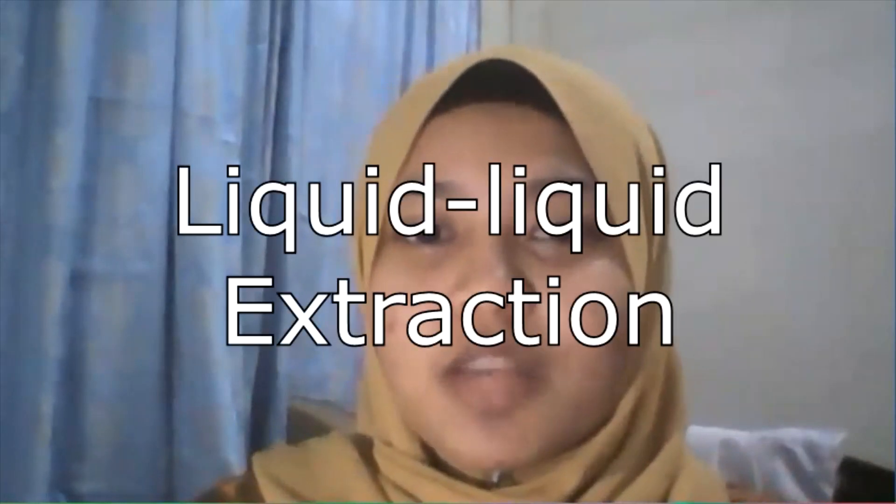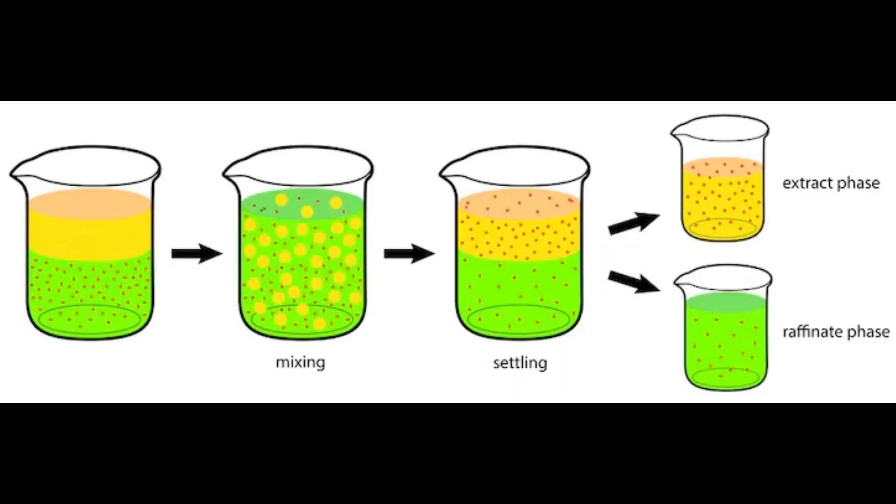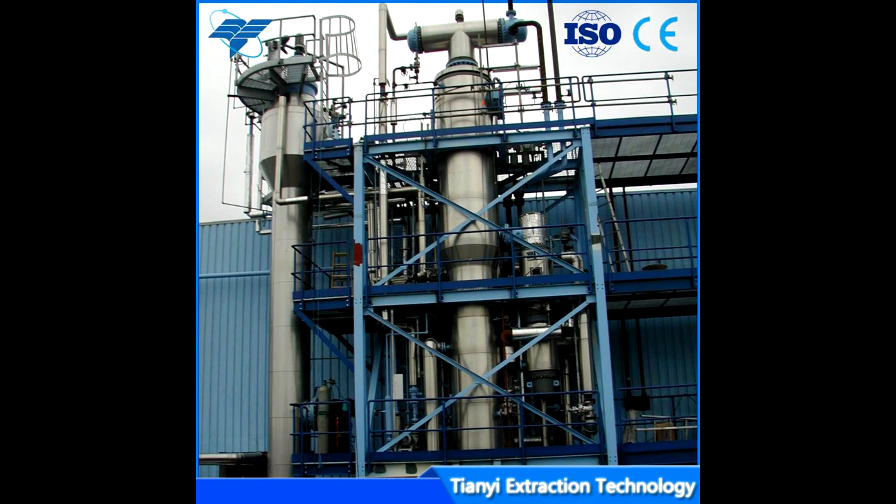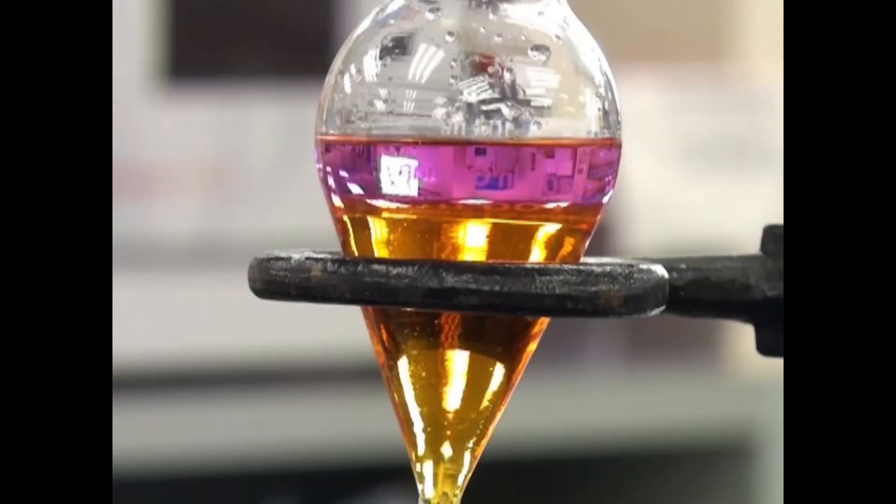Hi, I am Omi Zunaika. For the next process is liquid-liquid extraction. Liquid-liquid extraction, also known as solvent extraction, involves the separation of the solute of a liquid solution by contact with another insoluble liquid. Now, let's take a look at this video to see how the process of liquid-liquid extraction in the laboratory works.